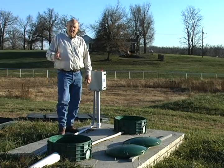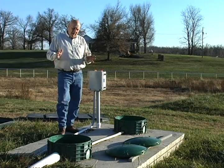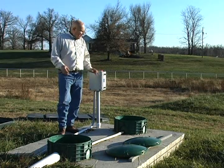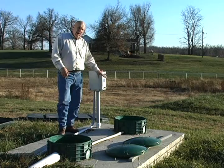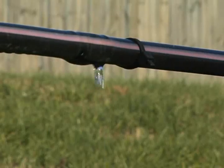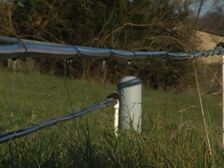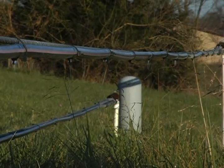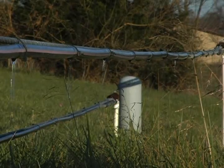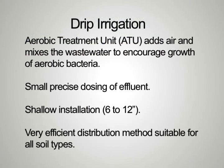The drip irrigation system has several key components. We're going to have a pump tank and a pump with a set of controls. There's going to be a flow meter and a filter that filters the last tiny little particles before we actually go to the drip field. Then we're going to have a return line with a pressure gauge on it that we'll use to set the pressure on the drip field.